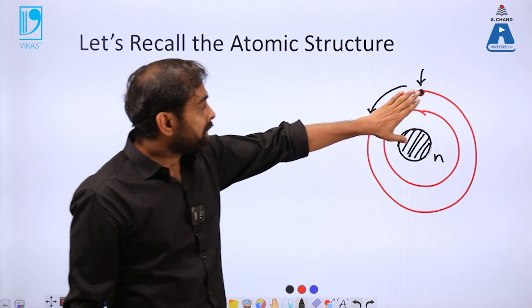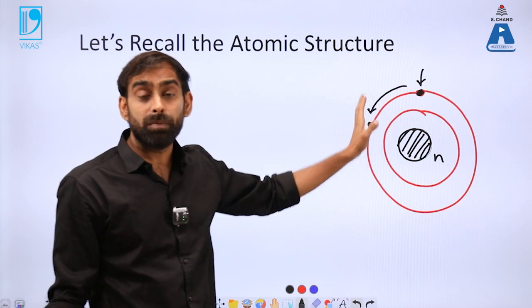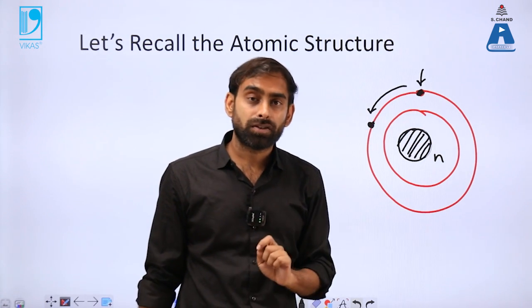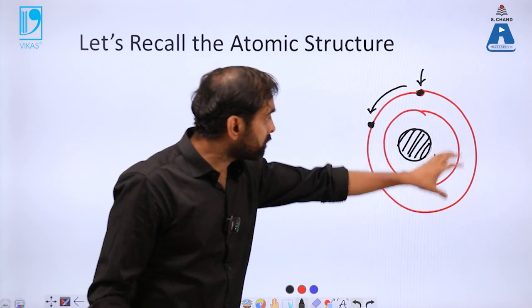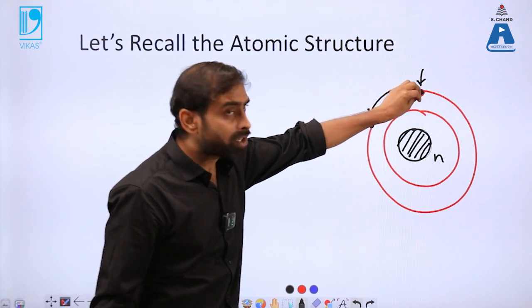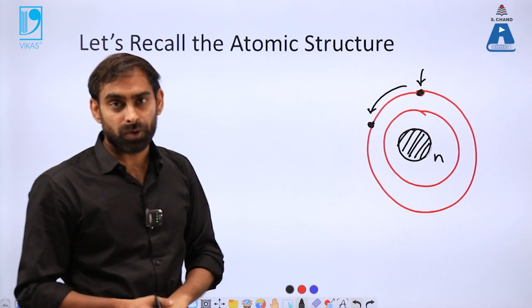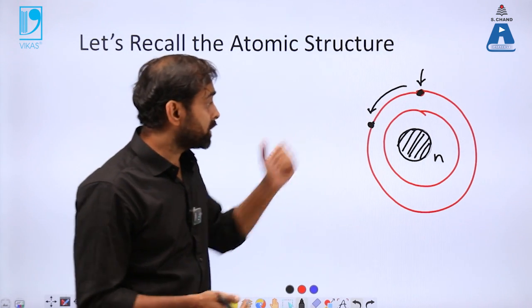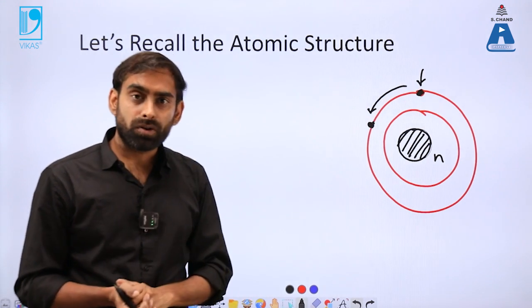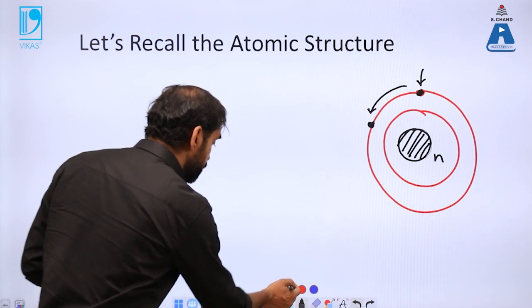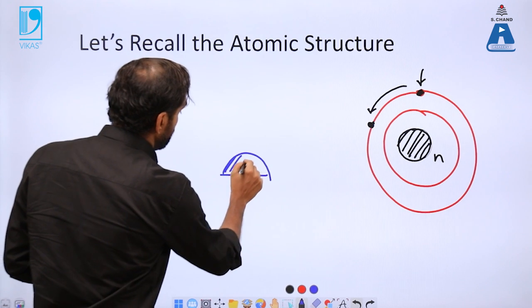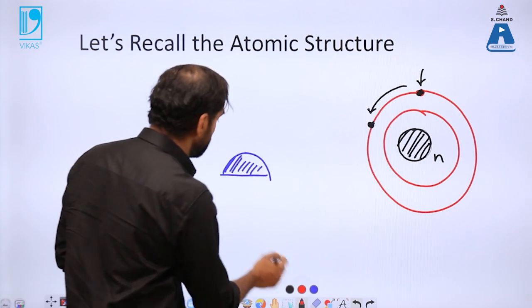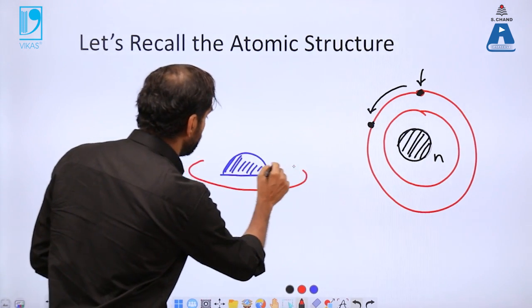That also came clear from Heisenberg's uncertainty principle, where it was stated that you cannot determine the position and momentum of a spinning electron altogether at the same time. So that uncertainty principle further confirms that these electrons are not particles anymore.